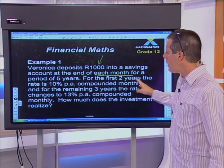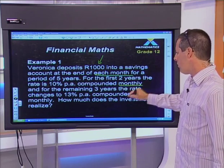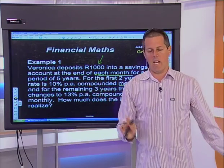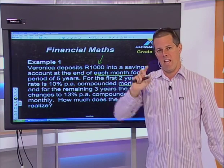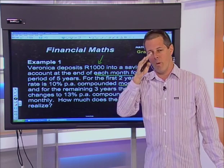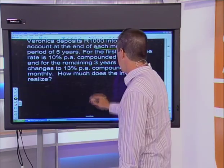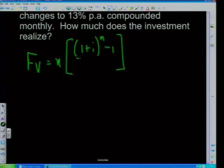First, ask yourself: is this a future value or present value? We're saving for the future, so it's a future value annuity. The future value formula is: FV = X × [(1 + i)^n − 1] / i. X is the monthly installment: R1,000. Because the interest rate changes after two years, we must split the annuity into two parts. You can never change the interest rate within an annuity — as soon as it changes, you must stop that annuity.